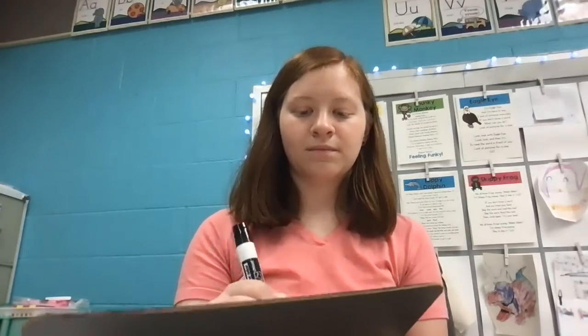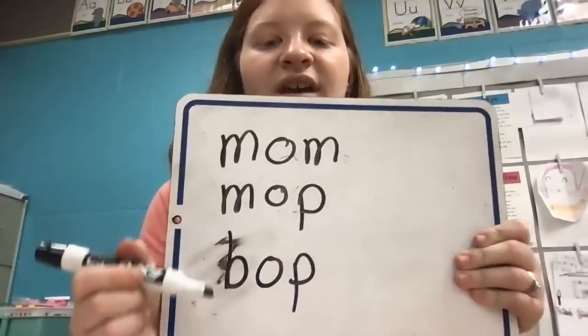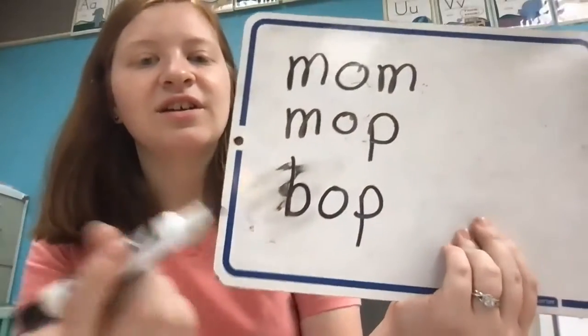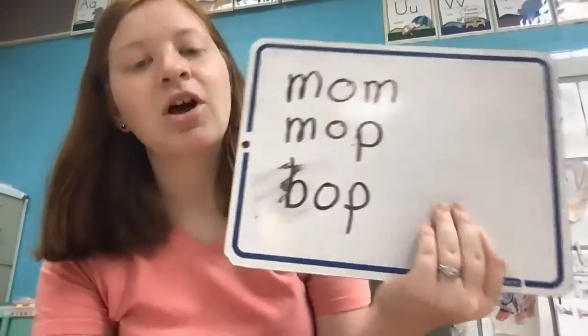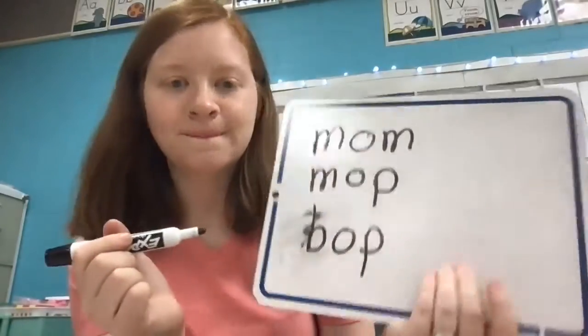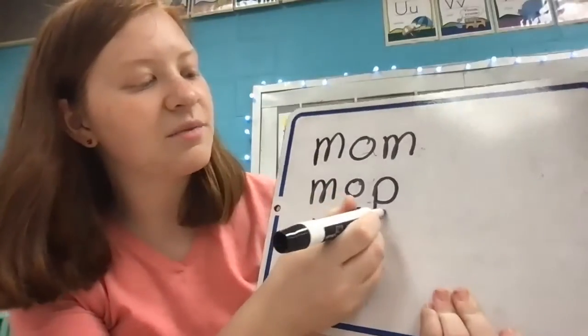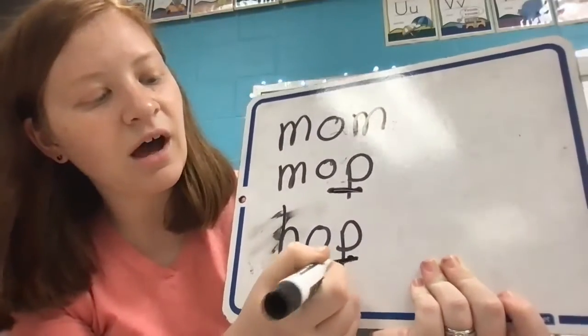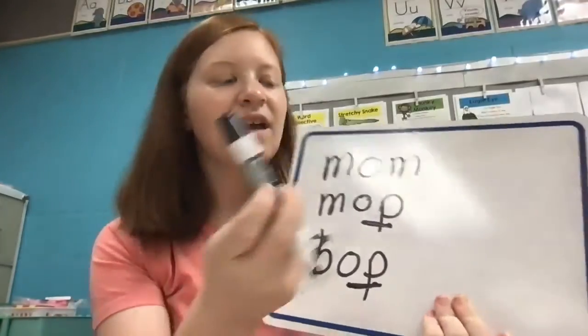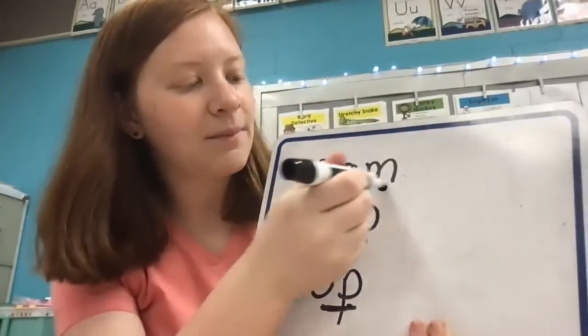All right, let's try that one more time before we jump into our worksheet. For these three words, we have mom, mop, and bop. Take a look at these words and point to the one that you think does not belong. We have mom, mop, and bop. If you said mom does not belong, you are correct, because mop and bop both have 'op' as their middle ending sounds. But the word mom has 'om,' which makes it different and not rhyme, so we'll circle that and kick him out.